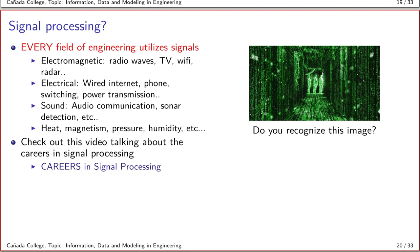The ability to see relevant data in the noise is central to signal processing. Think about the different types of signals we have around us. We have electromagnetic signals in the form of radio waves, TV, WiFi inside our home, radar. You can think of electrical signals such as the current that flows from the wall to your device, power lines that carry power to our homes, switches. You can think of sound signals, audio communication, sonar detection. You also have signals in terms of heat, magnetism, pressure, humidity, and so on.